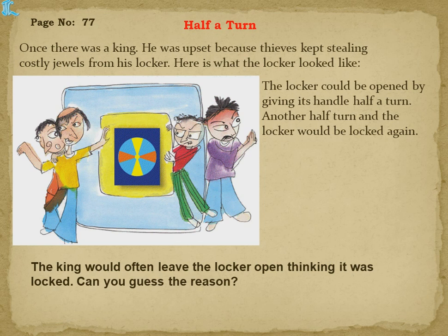Here is what the locker looked like. The locker could be opened by giving its handle half a turn, and another half a turn would lock it again. The king would often leave the locker open thinking it was locked. Let's understand why — he would leave the bureau open thinking he had locked it.